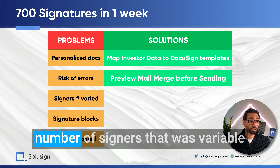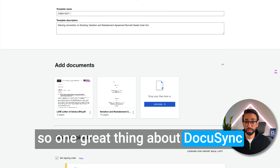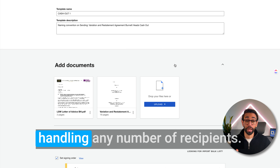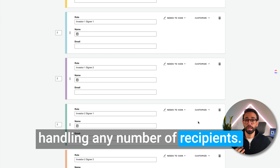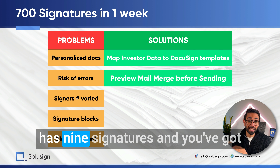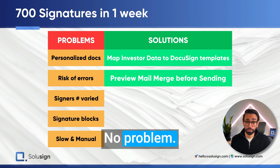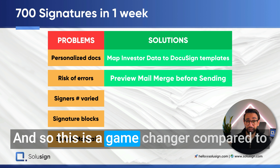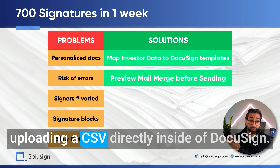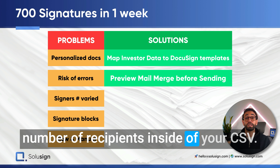The next problem was the variable number of signers. One great thing about SoluSign is its hassle-free approach to handling any number of recipients. Whether an envelope has nine signatures or 13 signatures — no problem, it just works. This is a game changer compared to uploading a CSV directly inside DocuSign, where you have to stick to the same number of recipients in your CSV.